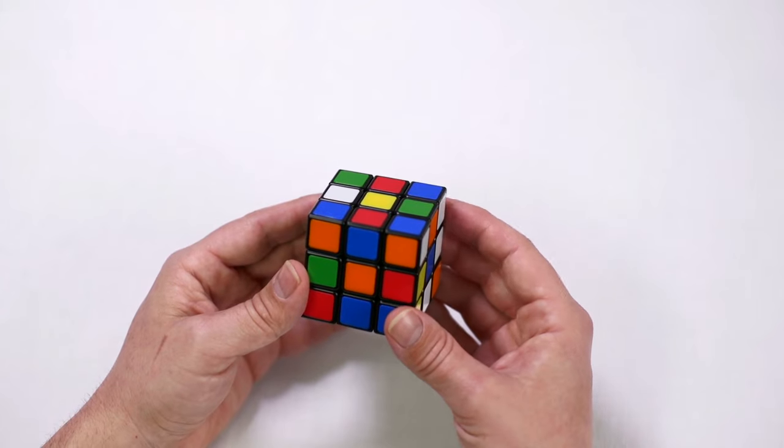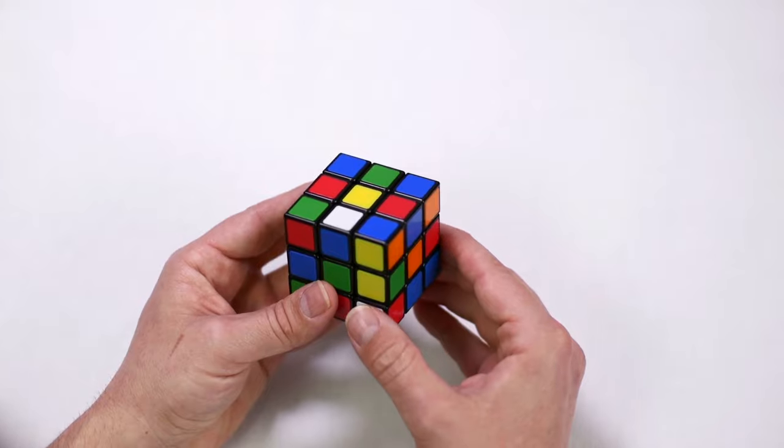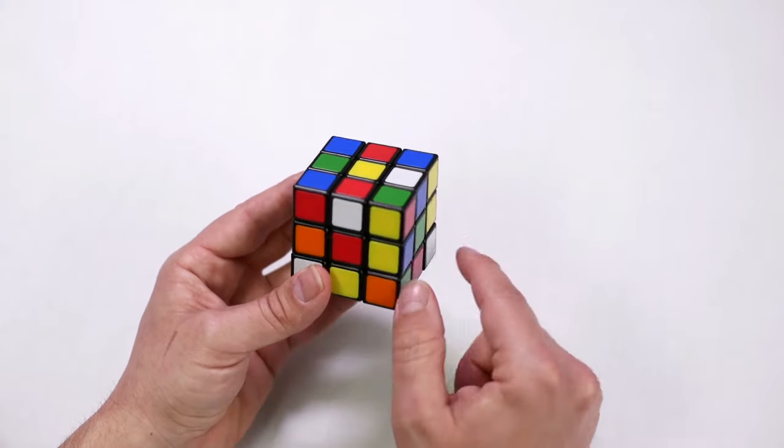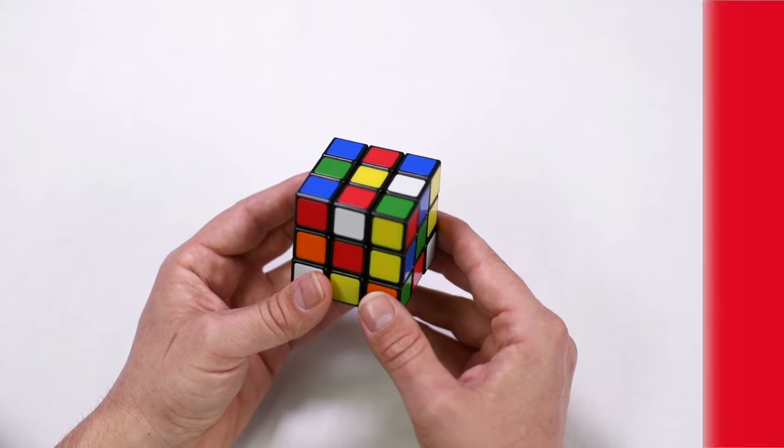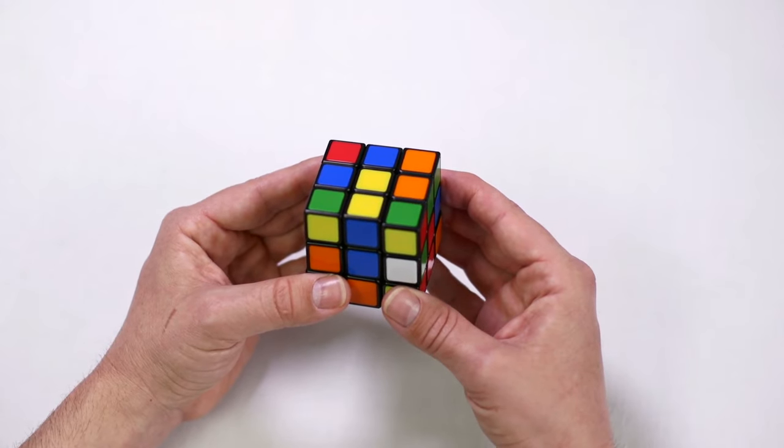Once you've scrambled your cube you may find you have a white edge piece already in position. If so, leave it there. You may also find that you have a white edge piece on the top layer but not touching the yellow center. That's okay, we'll correct that shortly. If you don't have any in the top layer when you start, that's okay, we'll get there soon enough.